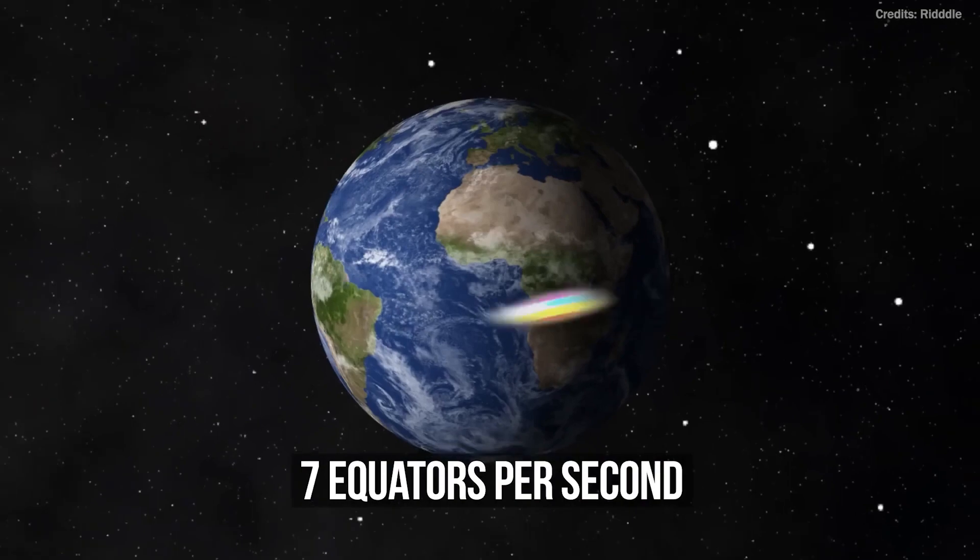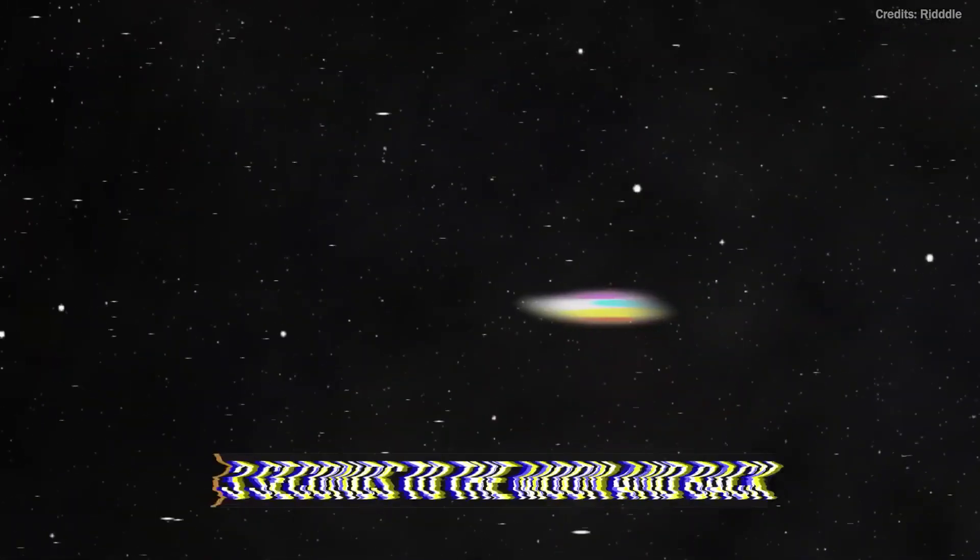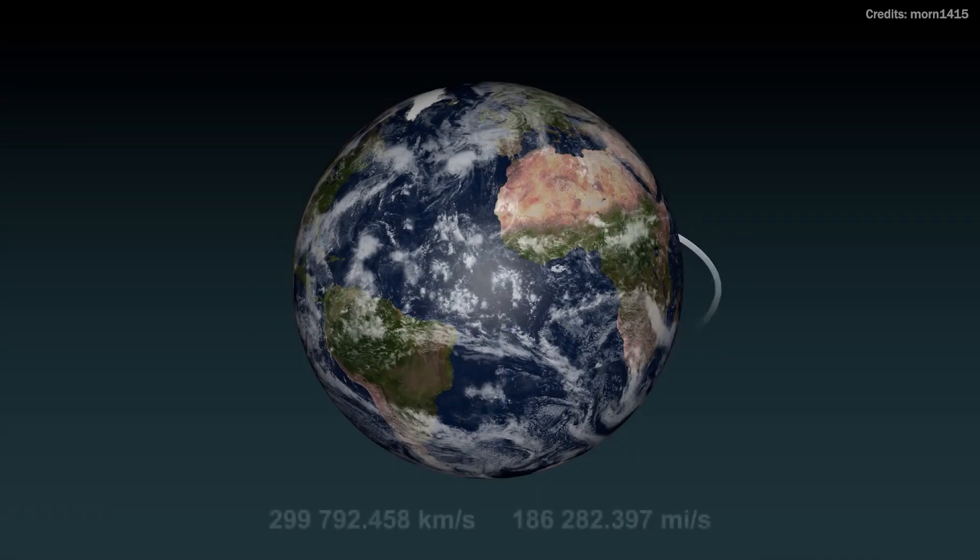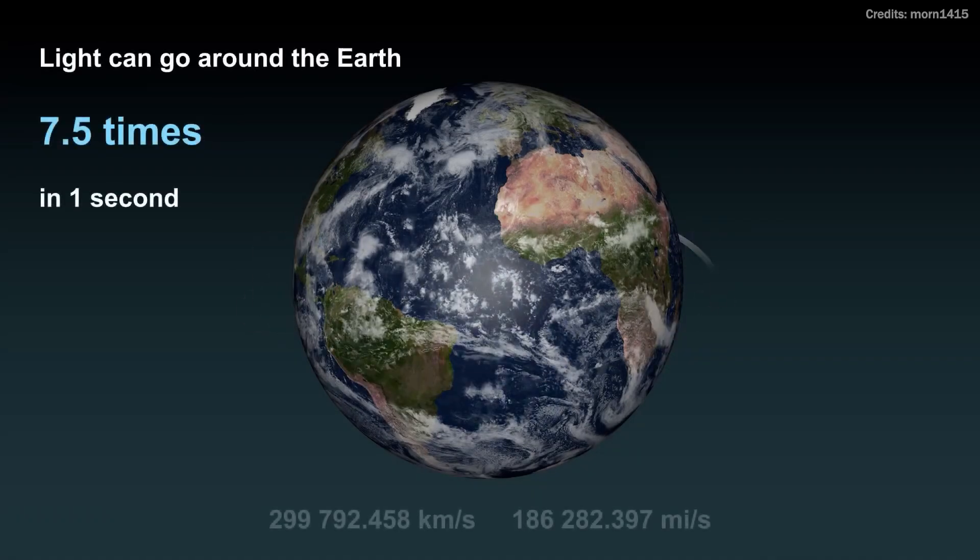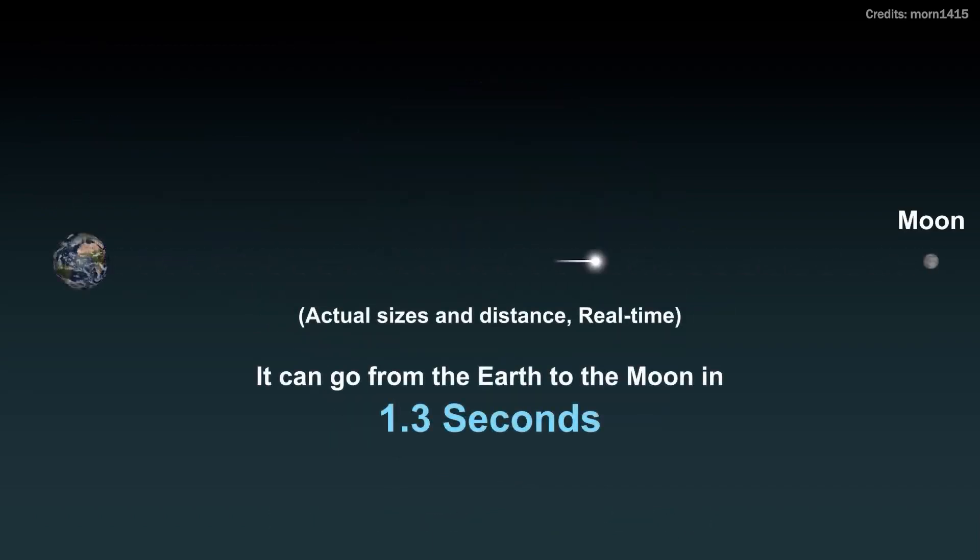By now, if you're curious enough, you already know that light is pretty fast. It is, in fact, the fastest thing that exists, and it's a universal law that nothing can move faster than light. Light travels at approximately 186,000 miles per second or 300,000 kilometers per second, and it takes just over a second to travel from Earth to the moon.